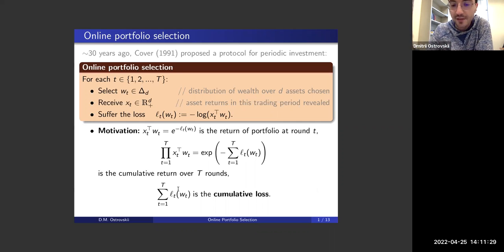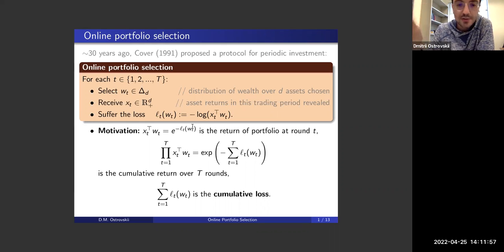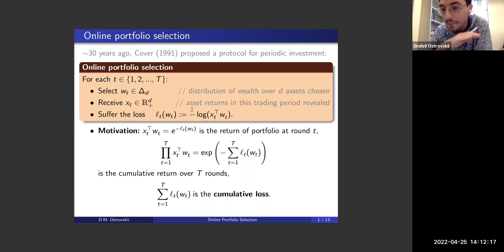The framework: for each discrete time period t, ranging from one to capital T (the horizon), you as a trader select a discrete distribution on d outcomes — your unit wealth redistributed over d possible assets. Then, at the end of this period, once w_t is selected, you receive the new state of the market: the vector of asset returns x_t, which is a positive vector. It's positive because we think the market is growing.